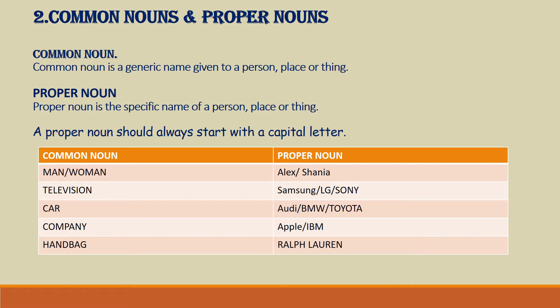Here are a few examples of common nouns and proper nouns. Man and woman are examples of common nouns, while the names Alex and Shania are examples of proper nouns. Television is a common noun, while the brand names Samsung, LG, Sony are examples of proper nouns.